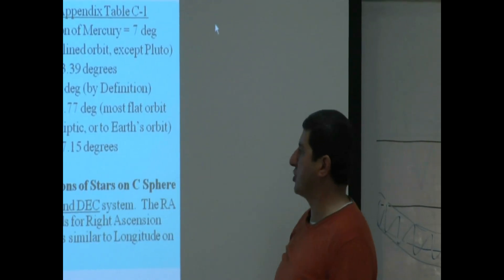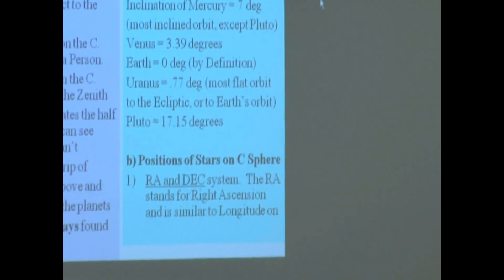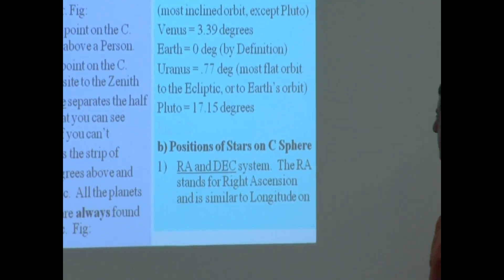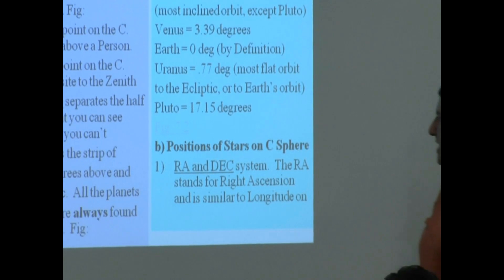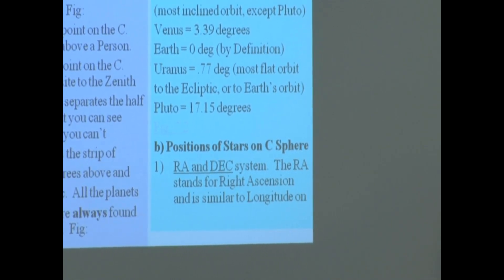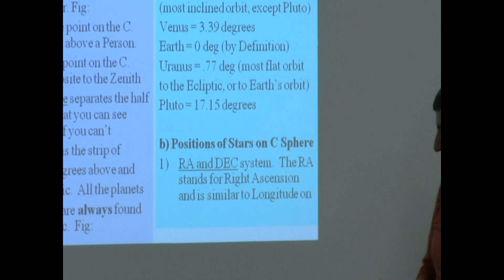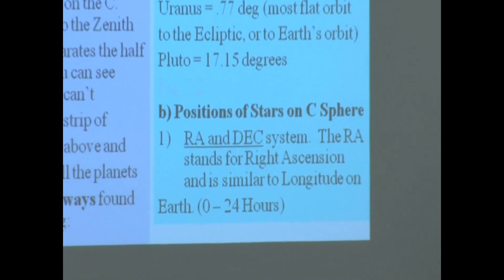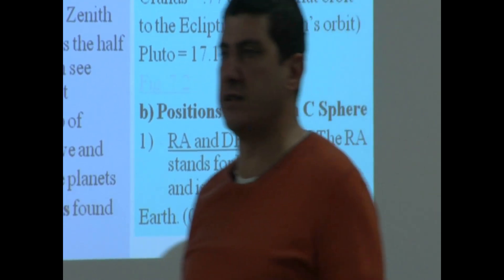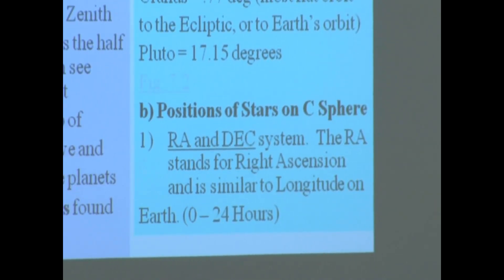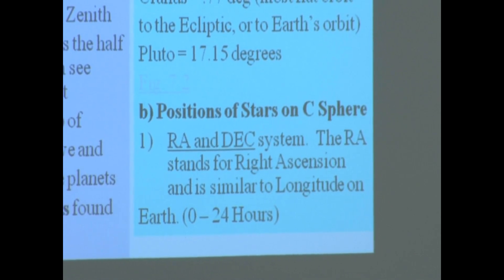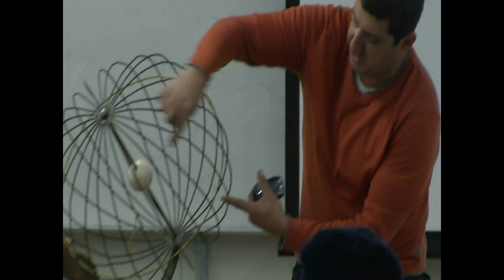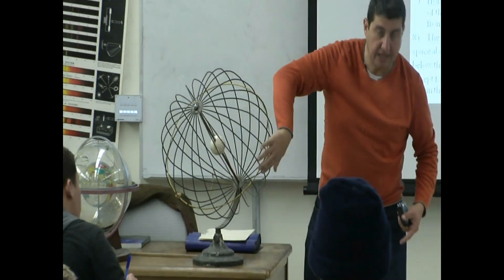Now we're ready to talk about positions of stars on the celestial sphere. Now that we've cut the celestial sphere into different spacings, we talk about the RA and DEC system. RA stands for Right Ascension and is similar to longitude on Earth. The vertical angles you see here are RA angles.